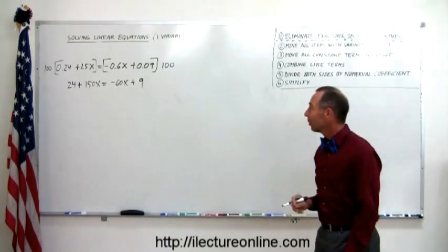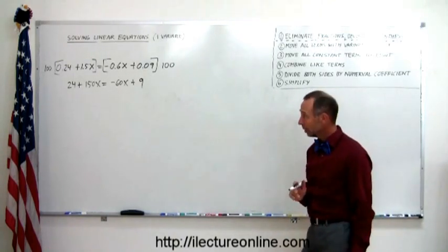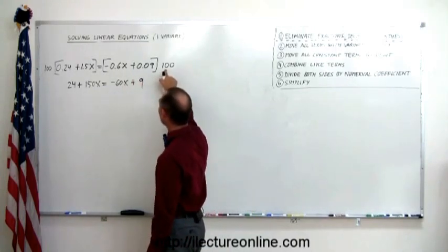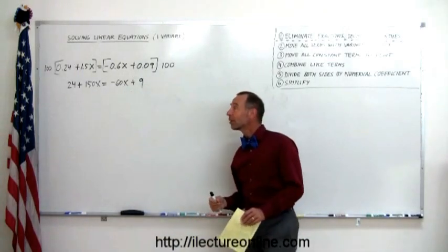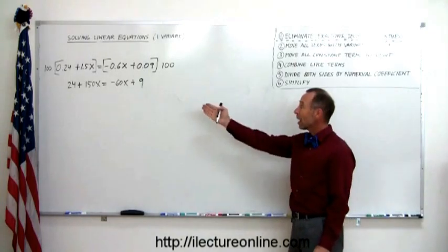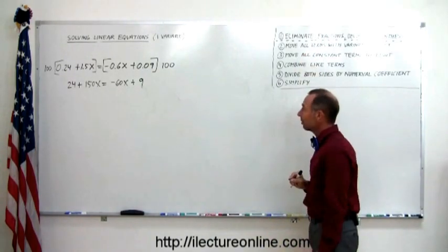All right, so in one single step, we eliminate all the decimals. Always make sure that you multiply both sides of the equation with a one and the number of zeros that equates to the number of decimal places you find, the greatest number of decimal places you find in any one of the terms. At that point, now again, you have an equation that looks just like the others, you start with the next five steps.